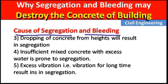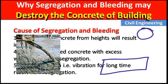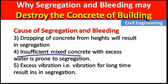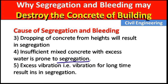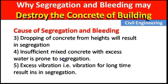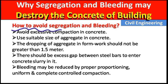What are the causes of segregation and bleeding? First, dropping of concrete from height results in segregation — for example, when we pour concrete from a great height to the floor, there is a chance of segregation. Insufficient mixed concrete with excess water is also prone to segregation. If we mix concrete with more water than required, segregation may occur. Additionally, excessive vibration for a long time also results in segregation.